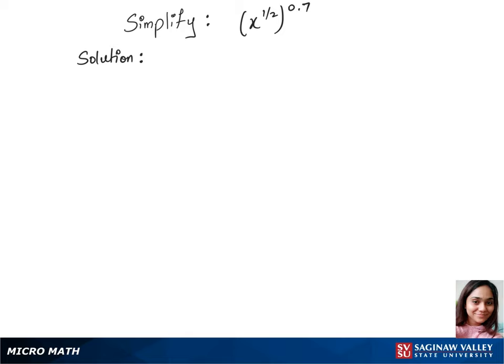To simplify x to the power 1/2, whole power 0.7, we'll use the power rule. We take the base x and put the power as 1/2 times 0.7, just like the product rule.